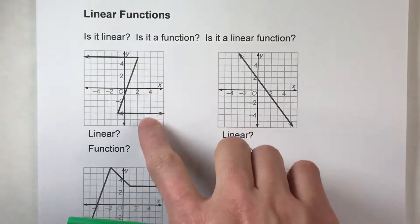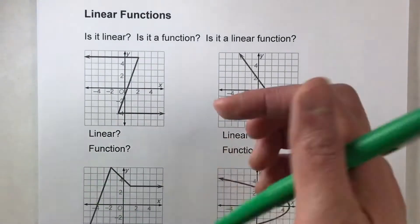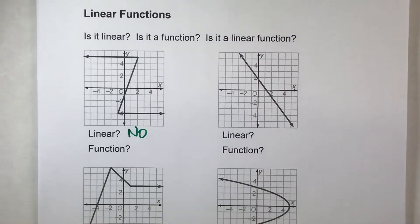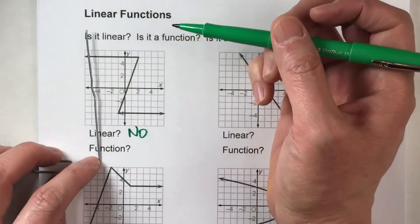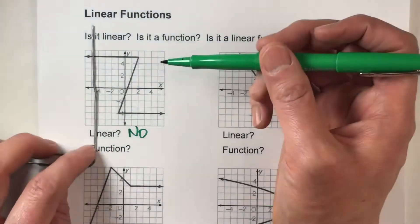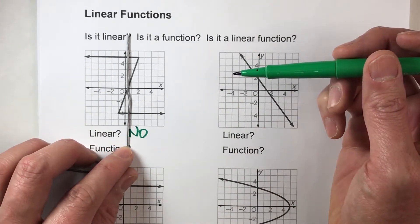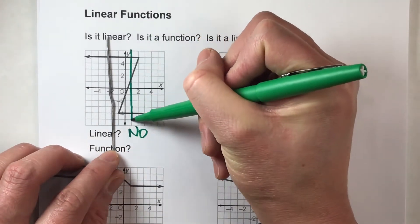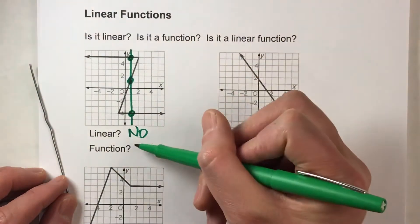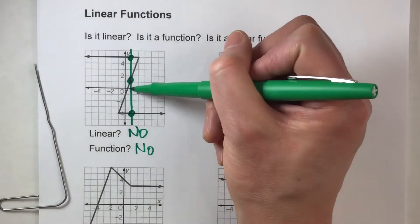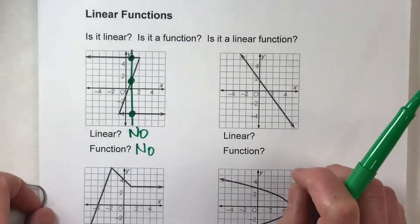For this first one, is it linear? Well it's made up of line segments but it zigzags. It needs to be one single line in order to be linear, so no, this is not linear. Is it a function? The vertical line test: if there is a vertical line that touches the graph in more than one place, it's not a function. Notice if I move my vertical line anywhere in here, it touches the graph in multiple places — it hits it here, here, and here. So no, this is not a function because an x value of one gives us three different y values. It does not pass the vertical line test.